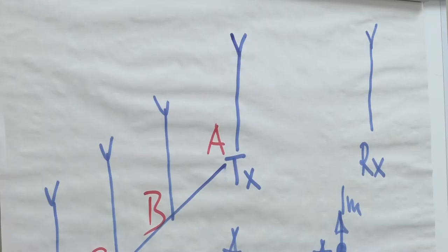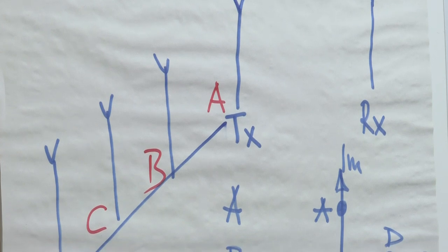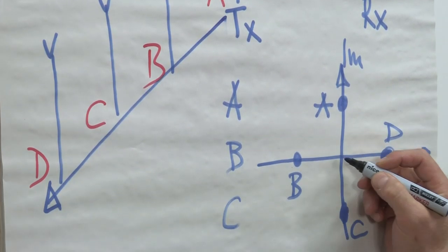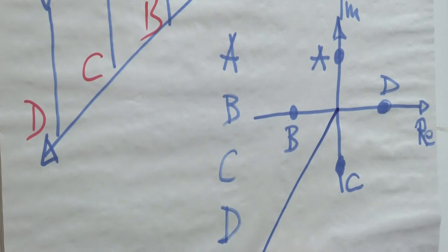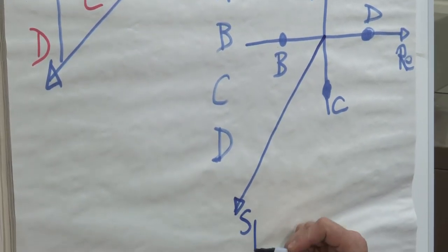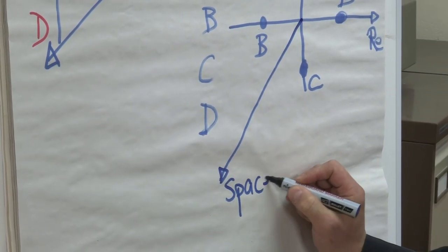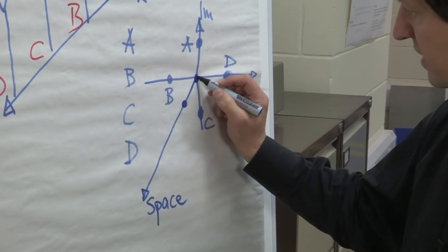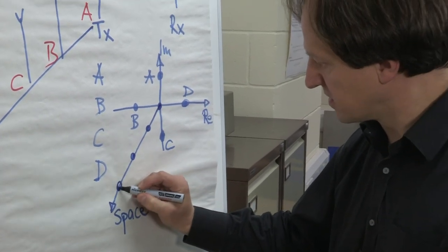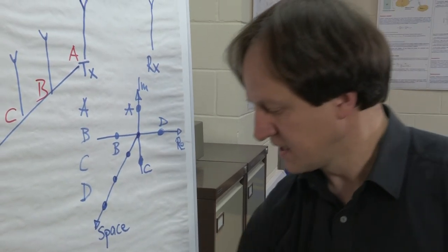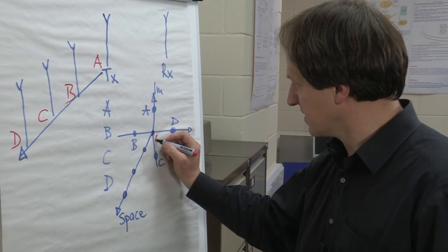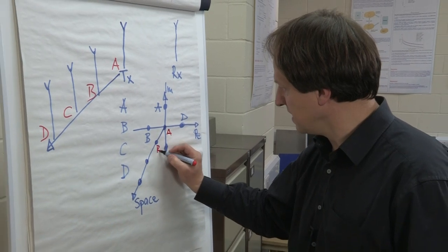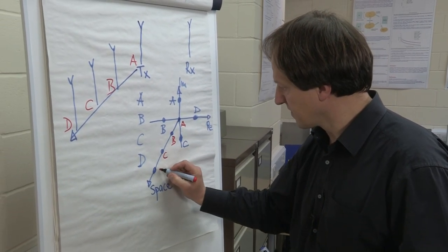So essentially what we have created now is a three-dimensional constellation diagram. And we can extend that diagram here into a third dimension called space, where we have the antenna constellation points or spatial constellation points. And we repeat that: this is A, this is B, this is C, and this is D.